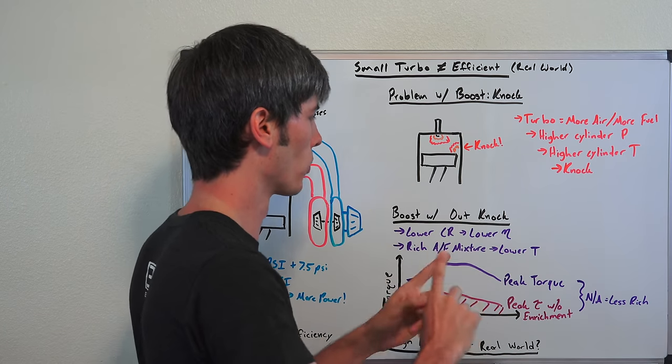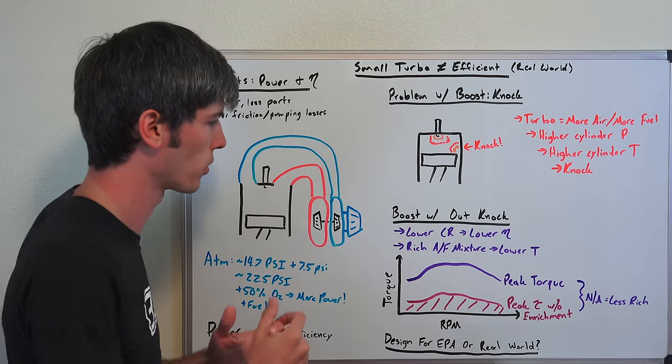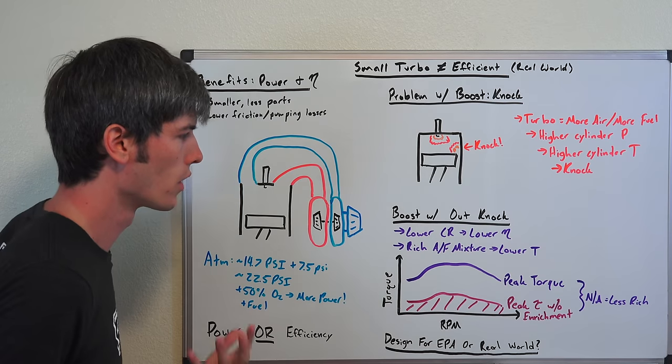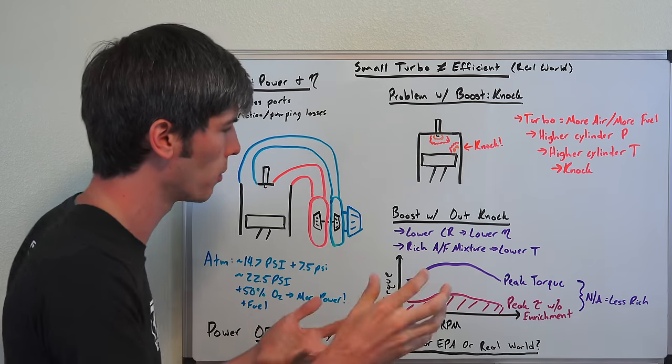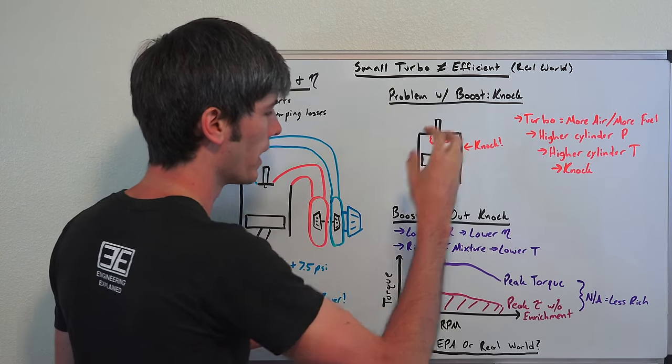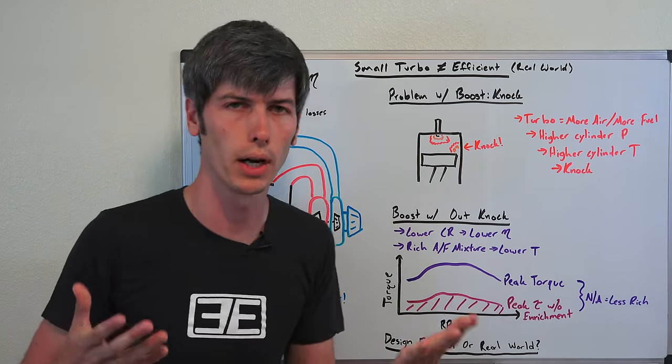But the real kicker here, and the real reason why you may not see great fuel economy using your downsized turbocharged engine, has to do with the air fuel mixture at these higher loads. What happens is, as you floor it in that small turbocharged engine, it wants to avoid these high temperature scenarios in each cylinder. And one of the ways it does that is by using a really rich air fuel mixture.